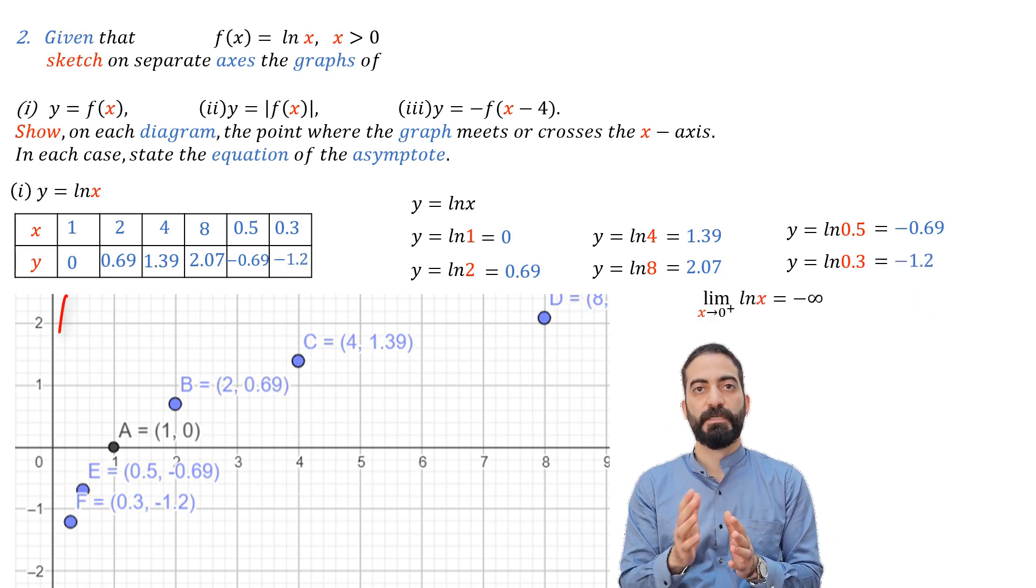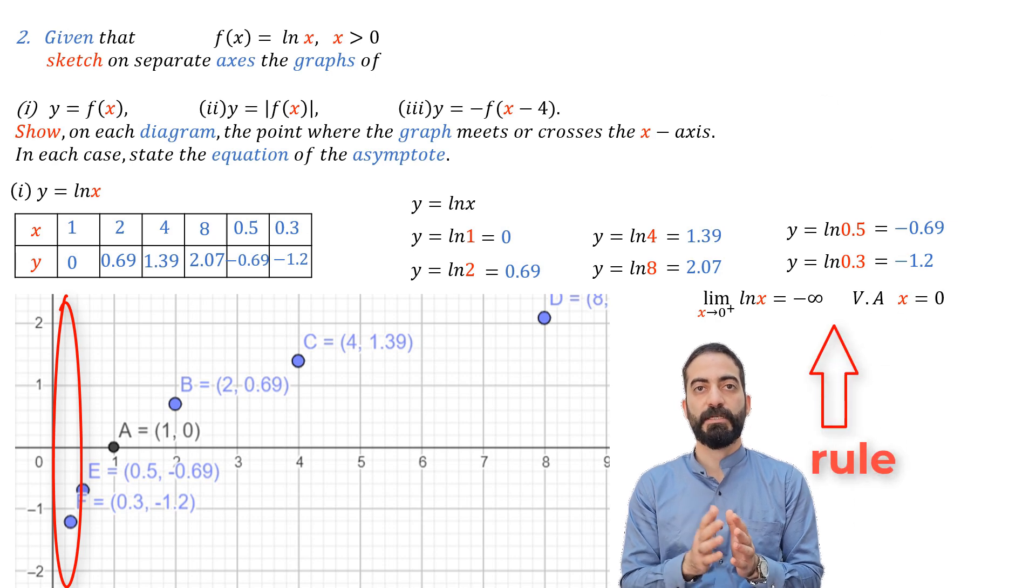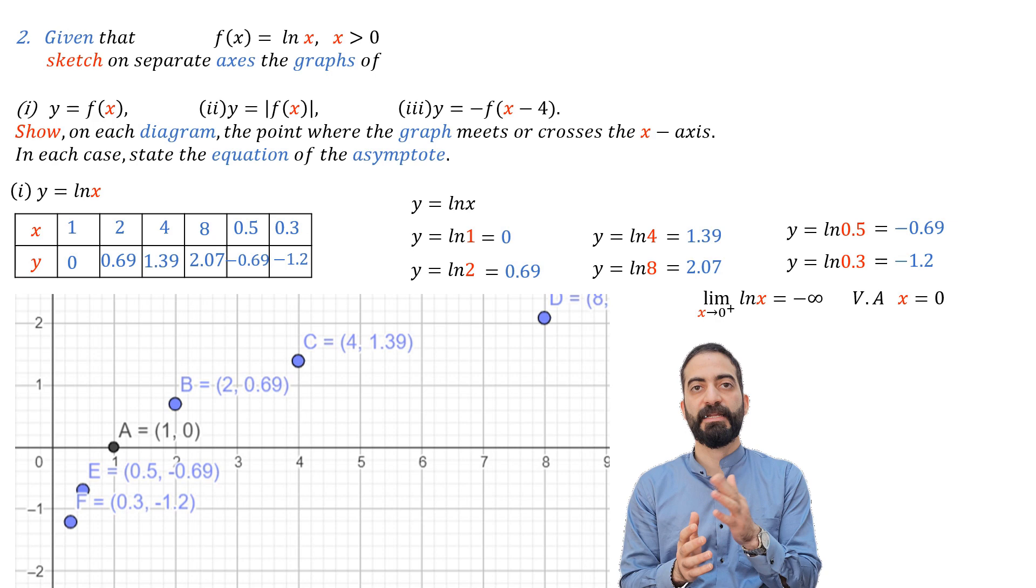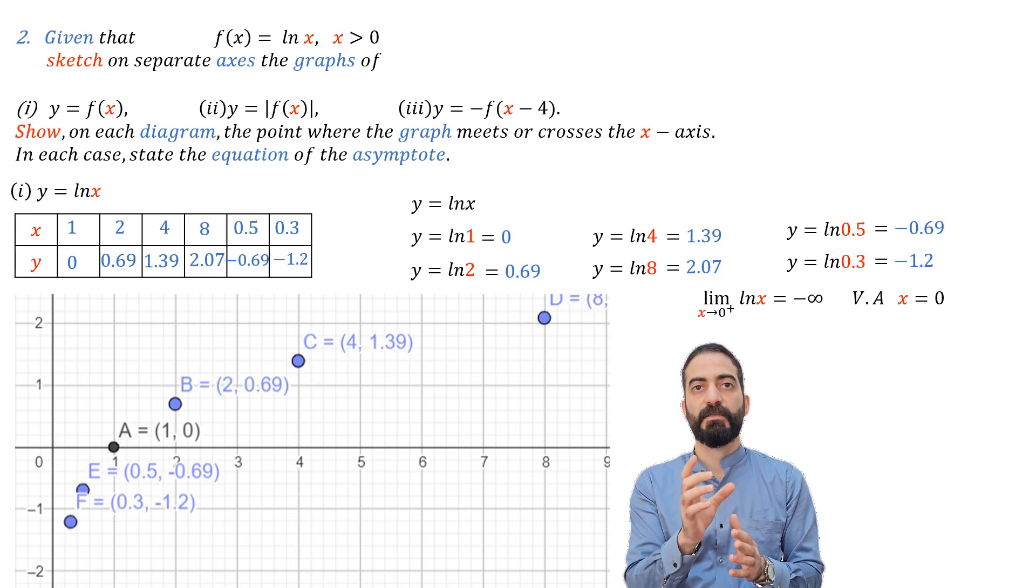As we notice here, we have a vertical asymptote. When x tends to 0 plus, the limit of ln(x) equals minus infinity. This means that we have a vertical asymptote and the equation of this asymptote is x equal 0. Now we connect the points to get the graph.